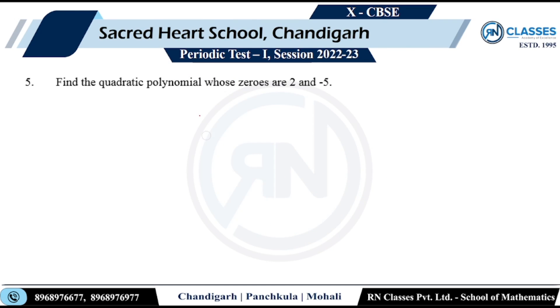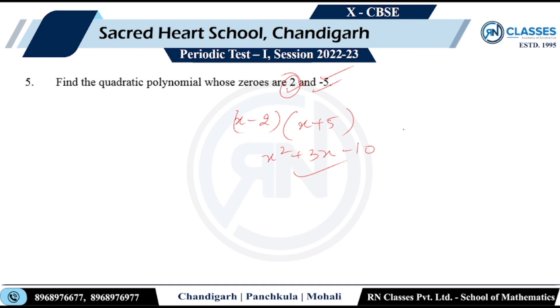Next: find the quadratic polynomial whose zeros are 2 and -5. If 2 is a zero, the factor is (x - 2). If -5 is a zero, the factor is (x + 5). Multiplying: x² + 3x - 10, which is the required quadratic polynomial.